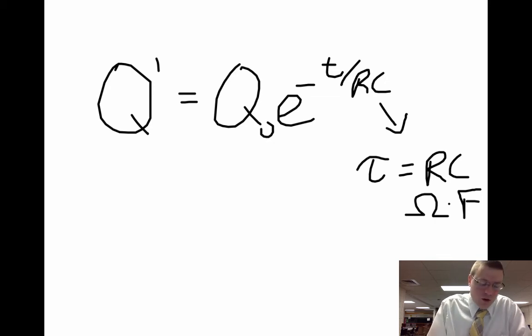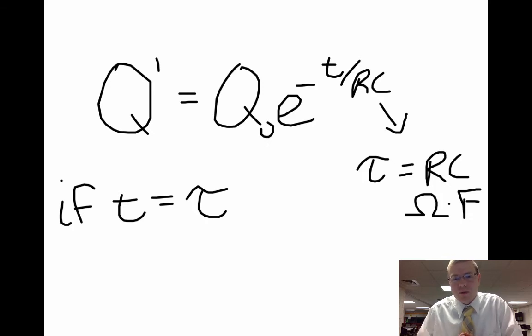So let's play some of those games. What happens if we reach a time where T equals tau? So what happens when we reach one of those time constants?